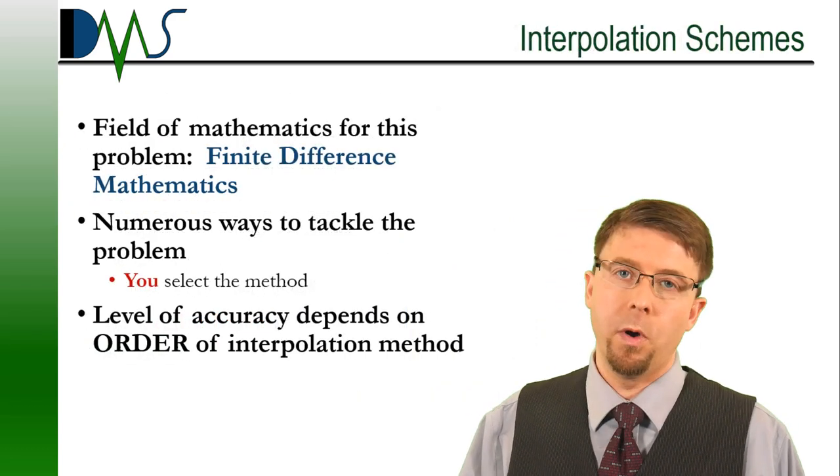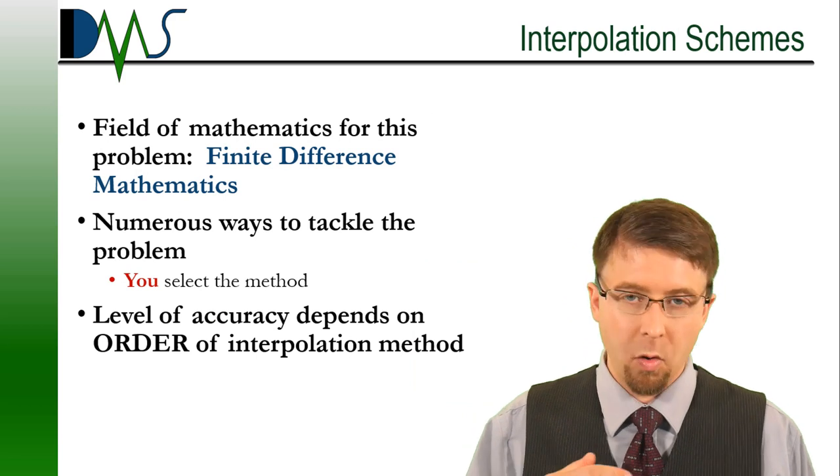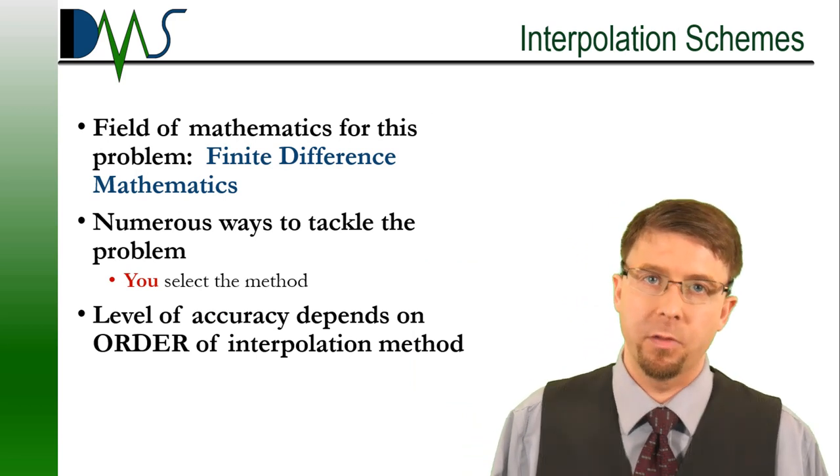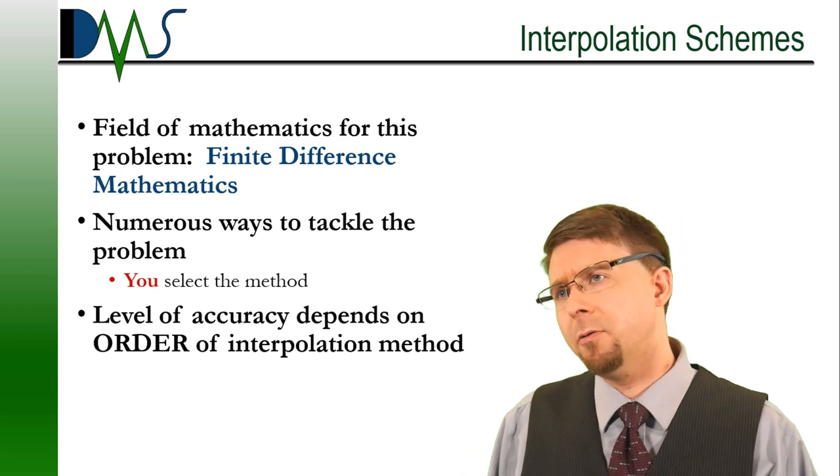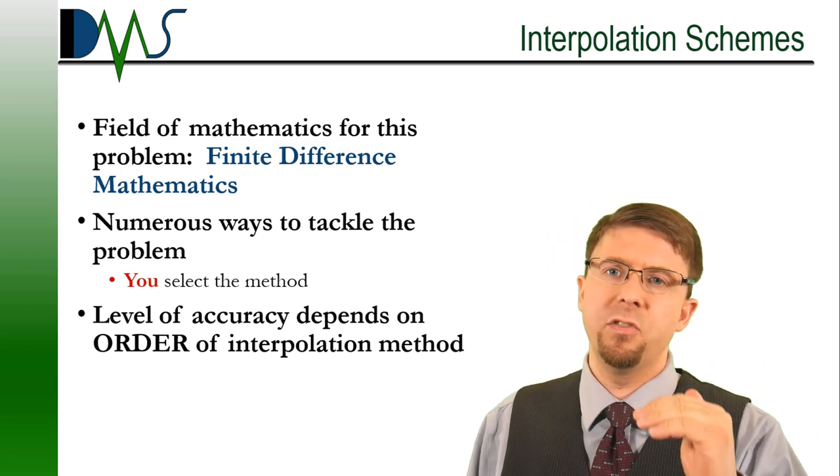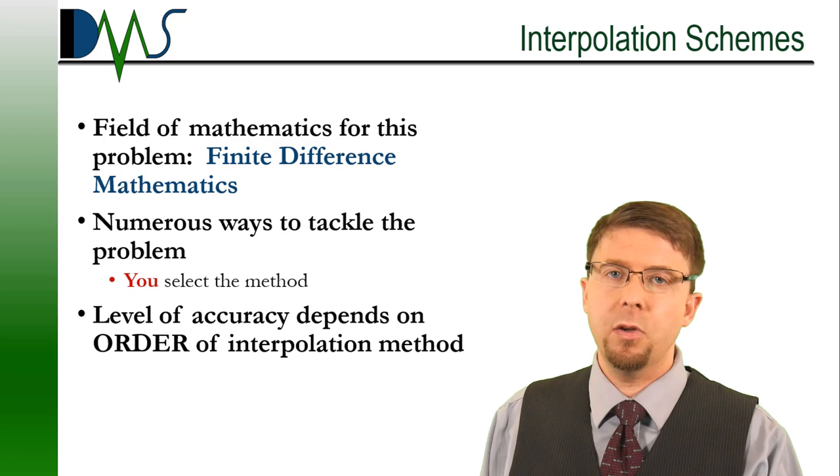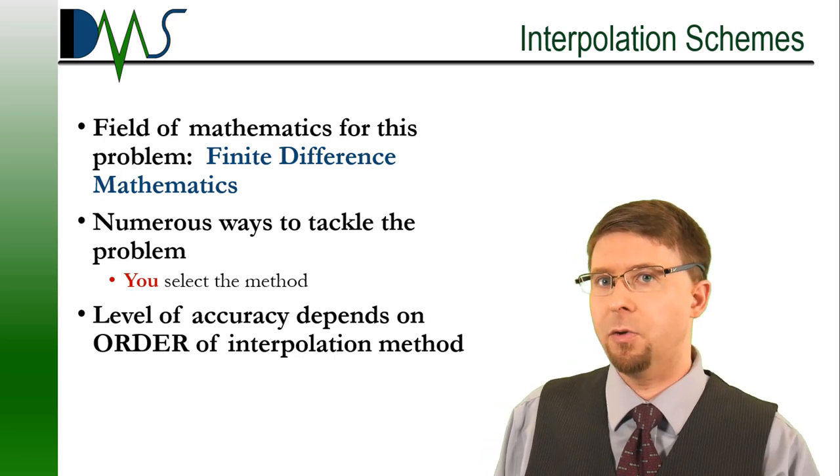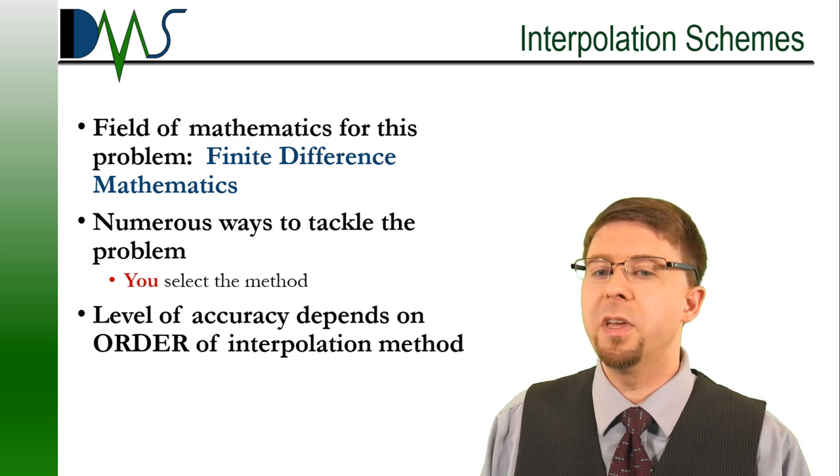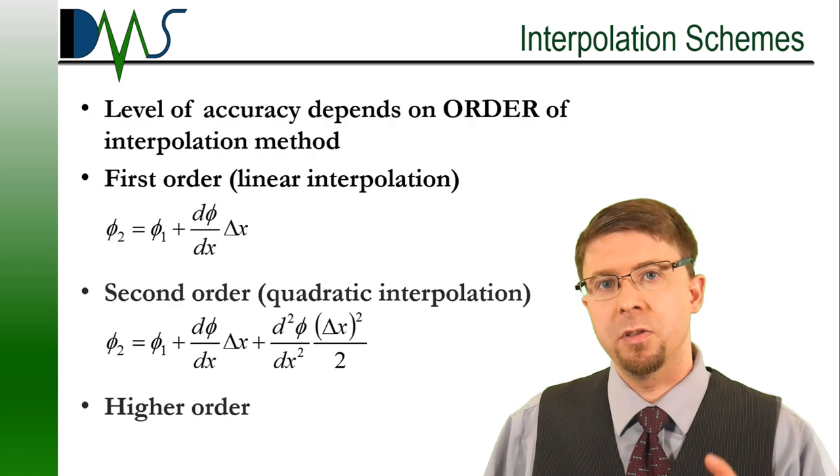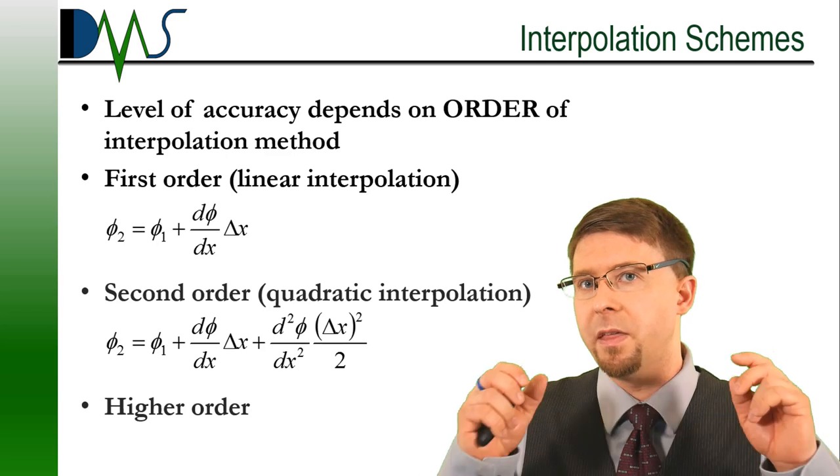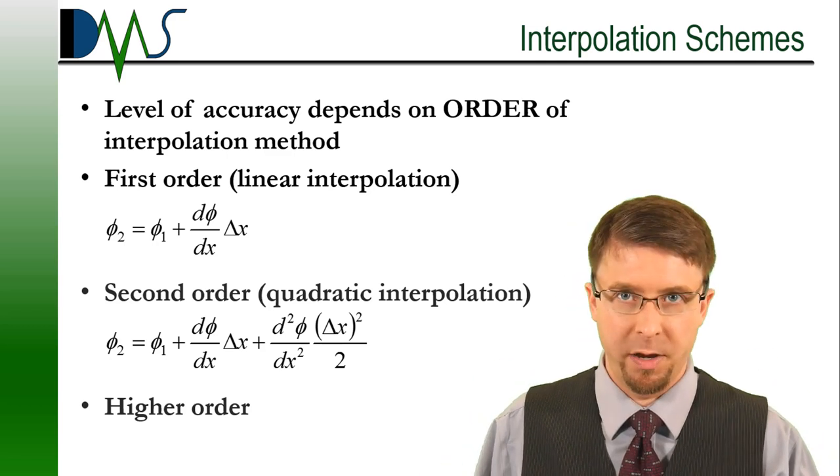There is more than one way to skin a cat. There's a whole branch of mathematics for this. You select the method. It isn't all the way down to the level of selecting each individual method. The major thing that you have to worry about when you're selecting your interpolation scheme is the order of the interpolation method. That's the big thing that matters. So the level of accuracy depends on the order of the interpolation method.